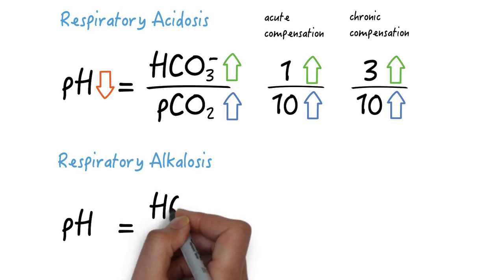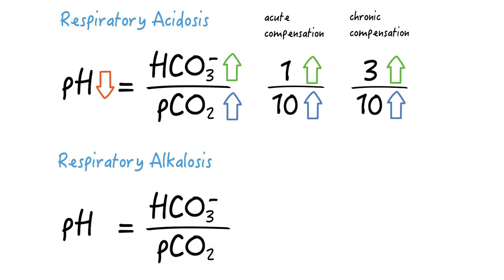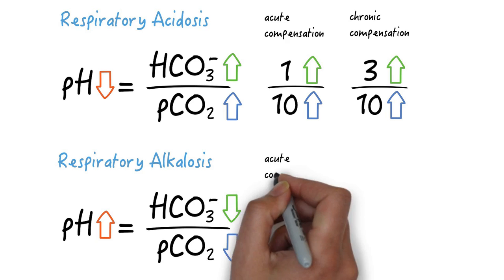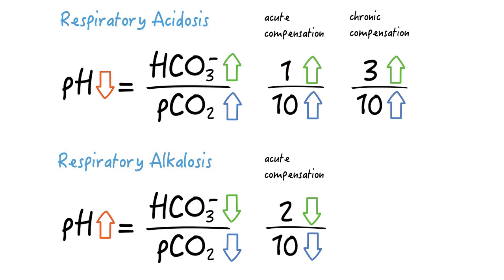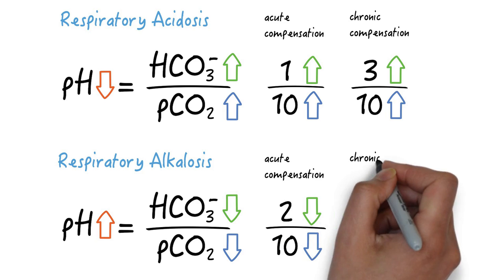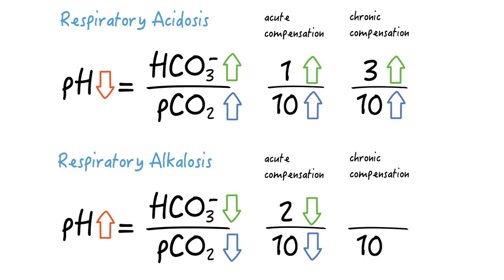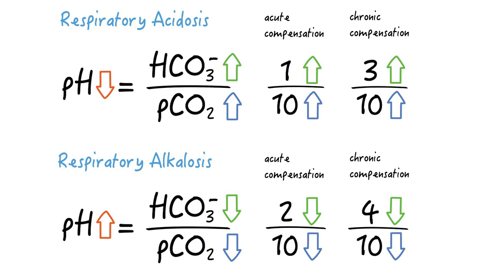In respiratory alkalosis the pCO2 goes down in response to hyperventilation. As a consequence the pH goes up, and since the kidneys try to compensate they will cause bicarbonate excretion, so the bicarb will go down. In acute respiratory alkalosis, for every 10-unit decrease in pCO2 bicarb will decrease by two units. In the chronic setting, for every 10-unit decrease in pCO2 the bicarb will decrease by four units.